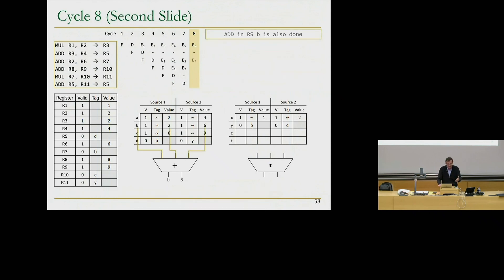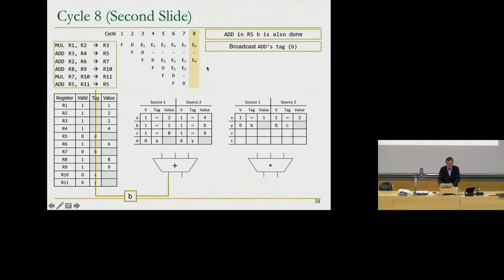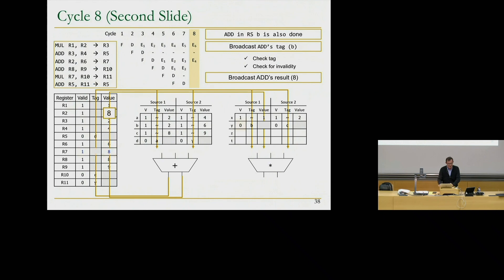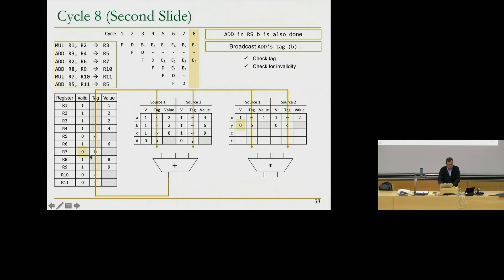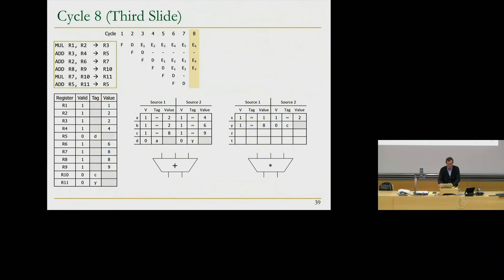In the same cycle 8, the ADD in RS-B also finishes. It broadcasts tag B and its value. Every location waiting for tag B captures the result — specifically, RS-Y was waiting for B as its first source, so it captures the value eight and marks that source as valid. We broadcasted the tag and value — that's a lot of wires. We'll continue this example next lecture. You should go through the full animation on your own today.